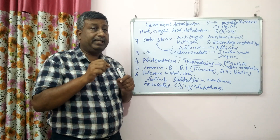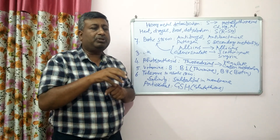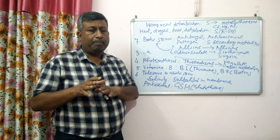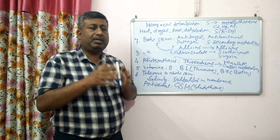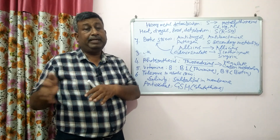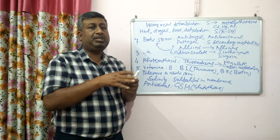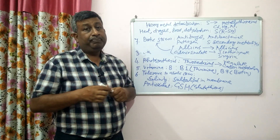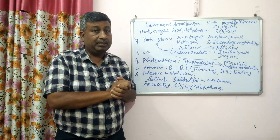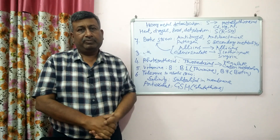If there is sulfur deficiency, there will be poor protein synthesis, poor oil synthesis, and for oil seed crops like mustard, soybean, and groundnut, oil recovery and oil content will be very low. Therefore, for oil seed crops especially, sulfur must be applied separately through fertilizer, because they have higher sulfur requirements than legumes and cereal crops like rice, wheat, and sorghum. We should maintain proper sulfur supply to plants through fertilizers when soil is deficient in sulfur.